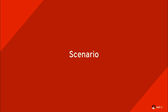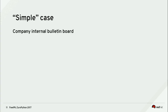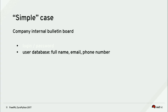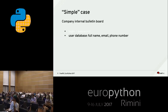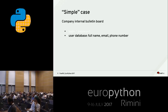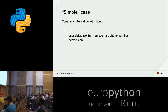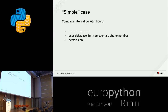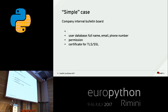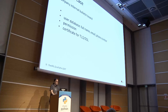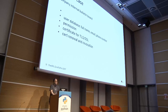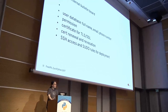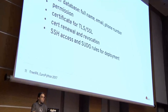The scenario: a simple bulletin board for your company to share notes. Users need to log in, so you need a user database showing real names, email addresses, maybe phone numbers. You need to handle permissions — you don't want an intern looking at notes from the CTO. You need TLS with certificates and private keys. You need to renew certs periodically. Developers need to SSH into machines and have sudo rules to get root privileges.